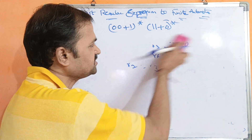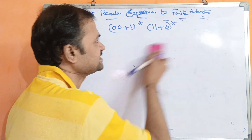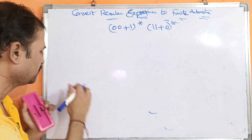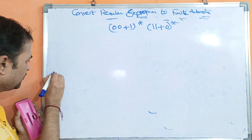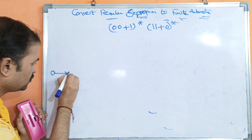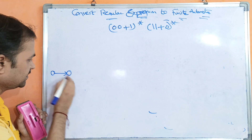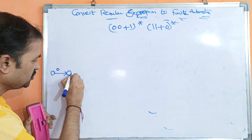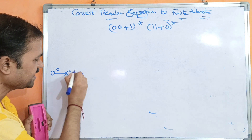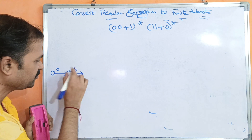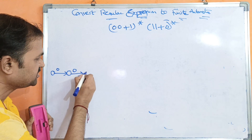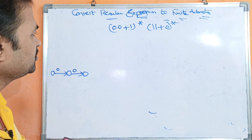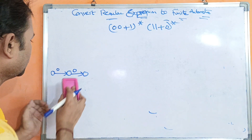First, for 00: for representing the first 0 we need two states, and for the second 0 we combine them into a single state without using epsilon. So this represents 00.